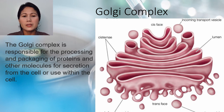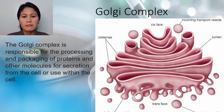Golgi bodies were once commonly called dictyosomes in plants. When viewed through an electron microscope, a single Golgi body is composed of a series of typically four to eight round flattened membranous sacs called the cisternae.